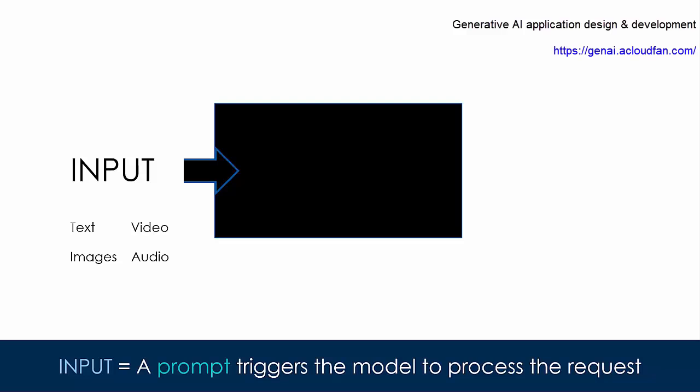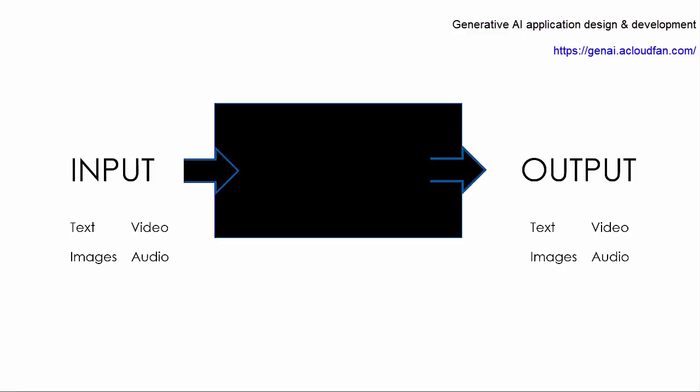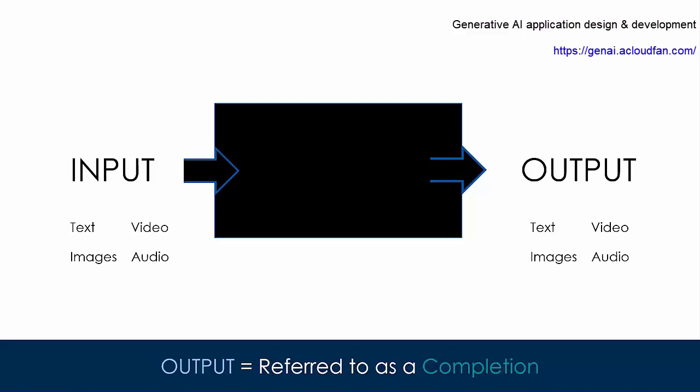The input in the context of Generative AI model is referred to as a prompt. Model processes the request and generates a response in a format as requested in the prompt. The output from the model is referred to as a completion.